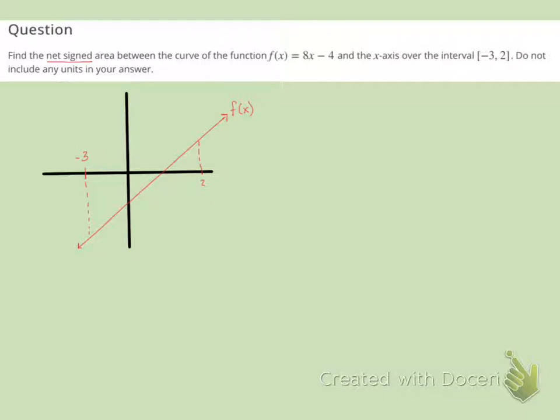So again I've got two triangles here. I've got this triangle and this triangle. One is below the x-axis and one is above the x-axis. I'm going to call this area 1 and this area 2.